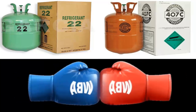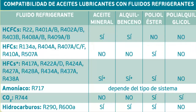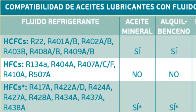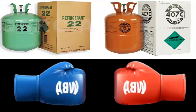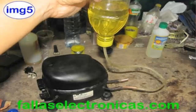Another significant difference between the two gases is their compatibility with different types of oil. R-22 is compatible with mineral oil and alkylbenzene, but not with PoE oil. On the other hand, R-407C is only compatible with PoE oil. This implies that when replacing R-22 with R-407C in air conditioning equipment, it is necessary to change the oil due to the differences in gas properties and lubrication requirements.